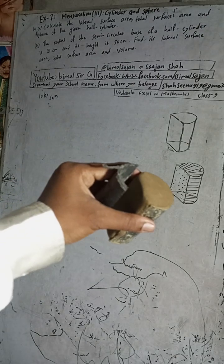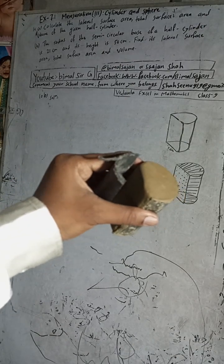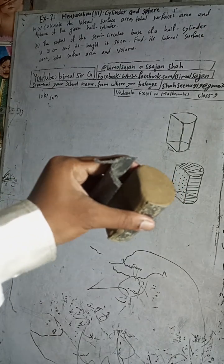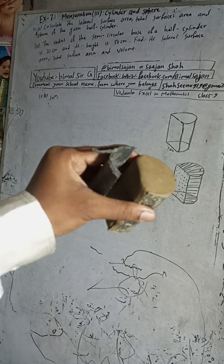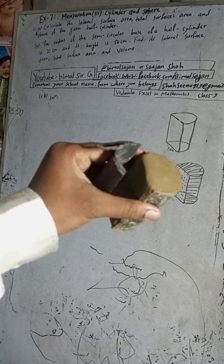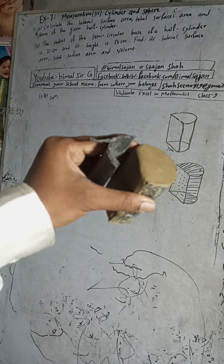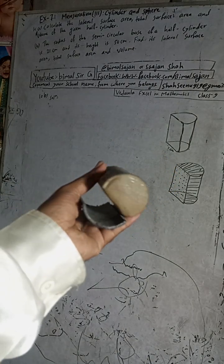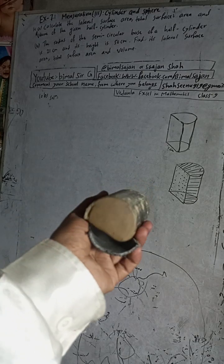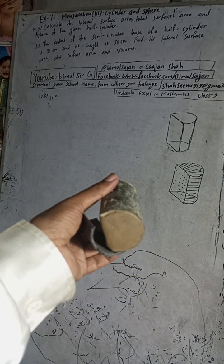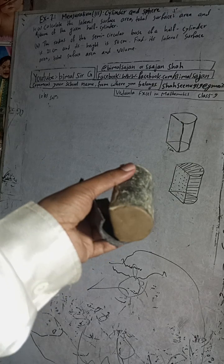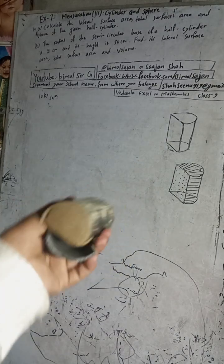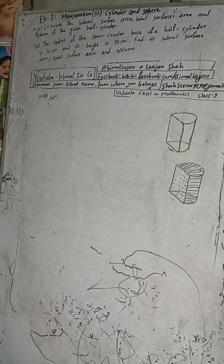Hi Class 9 and 10 students, welcome back to Vimal Sarji YouTube channel. Now I am going to solve question number 10B by experimental demonstration, Exercise 7.1, Mensuration third part: cylinder and sphere, Vedanth Excel in Mathematics Class 9. In the playlist you can see many solutions are uploaded.